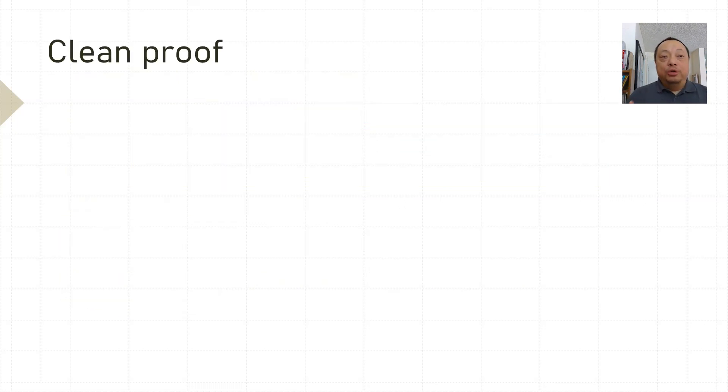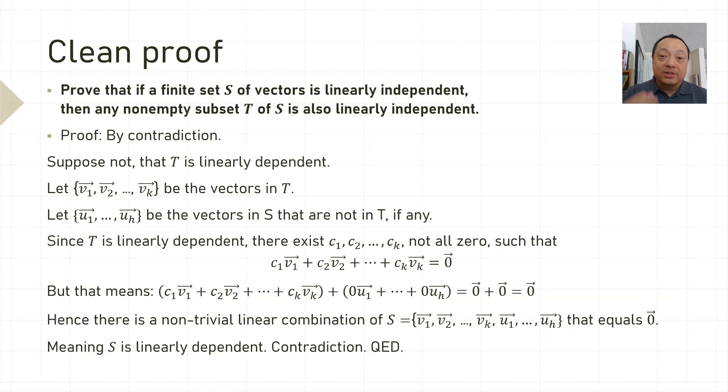Now let me show you a clean proof how this whole argument can be written down on paper. Part of the practice of doing a lot of proofs is that you learn to put what's in your head onto paper in a nice organized and concise manner. Note that it's customary that when you've arrived at the contradiction, you can just stop. You don't need to repeat the theorem.